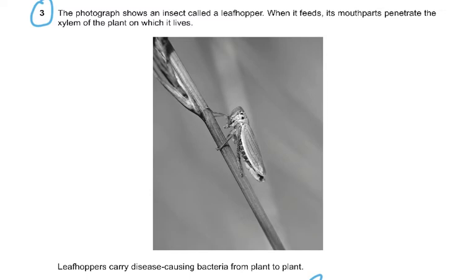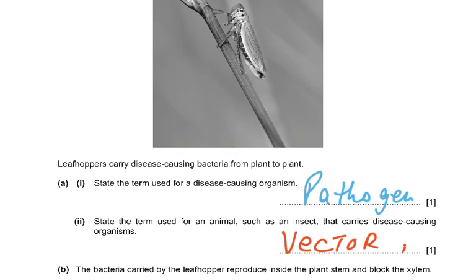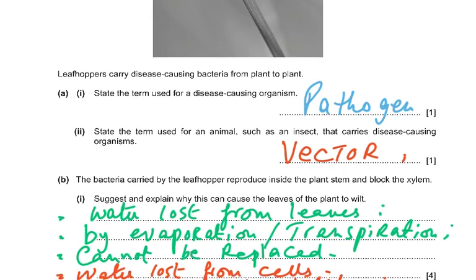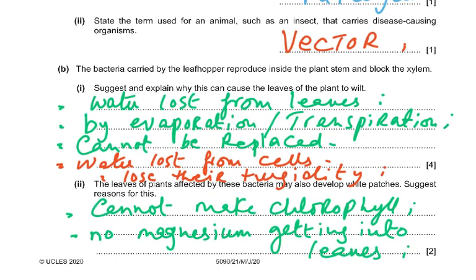Question 3: the photograph shows an insect called a leaf hopper. When it feeds, its mouth parts penetrate the xylem of the plant. Leaf hoppers carry disease-causing bacteria from plant to plant. State the term for a disease-causing organism — that is a pathogen. State the term for an animal such as an insect that carries disease-causing organisms — that is the vector.